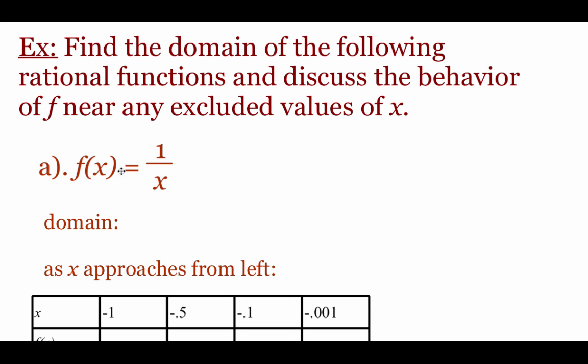We're going to take a look at this example f of x equals 1 over x. We're first going to look at its domain, and then we're going to look at what our graph is doing close to those domain issues. Since we're looking at 1 over x, the domain — since it's a fractional setup — we just need to make sure that the x value on the bottom isn't zero, because we can't divide by zero.